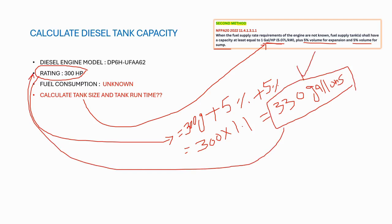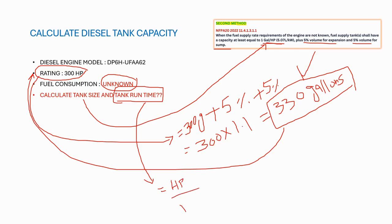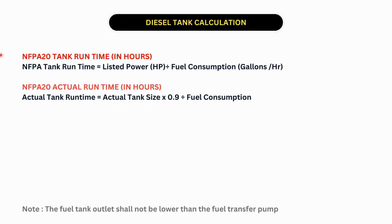An important point: when using Method 2, the tank run time cannot be calculated because we don't know the fuel consumption rate. The formula for tank run time requires engine horsepower divided by the fuel consumption rate. Since the fuel consumption is unknown, we cannot calculate the tank run time.